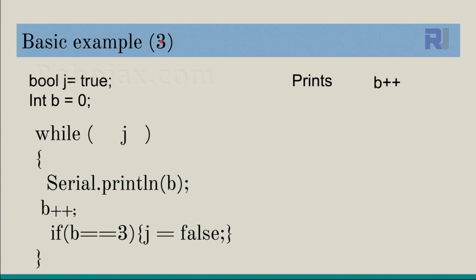For example three, this time we check j. We have one variable called j with initial value true, and we have integer b, this is zero. We have a while loop that checks j. J is a boolean, automatically it is either true or false.